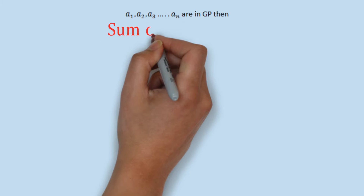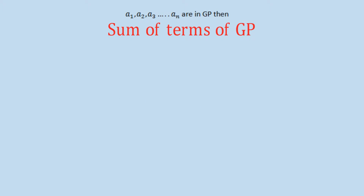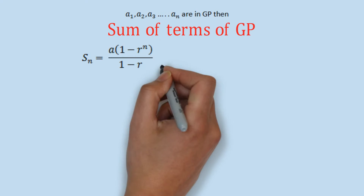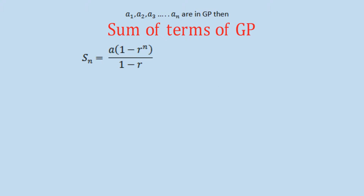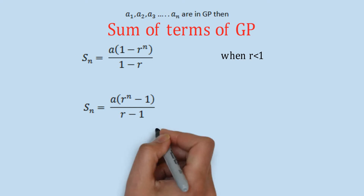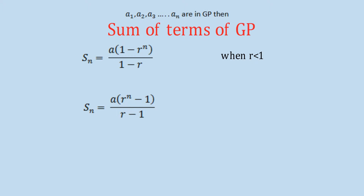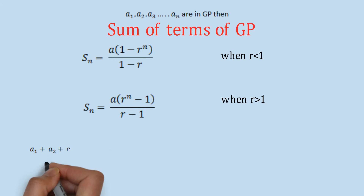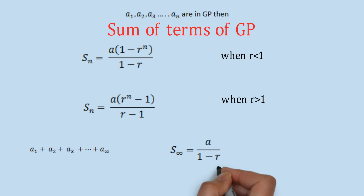We also need the formula to calculate the sum of N terms of a GP. Based on the value of the common ratio, there are two formulas: Sn = A × (1 − R^n) / (1 − R) when R is less than 1, and Sn = A × (R^n − 1) / (R − 1) when R is greater than 1. You can pause the video here to memorize these formulas. For an infinite GP, the sum is simply A / (1 − R).